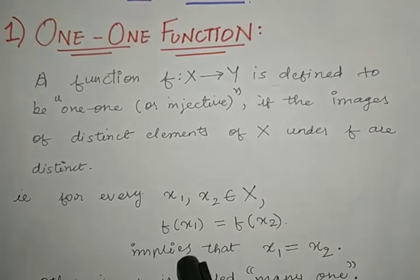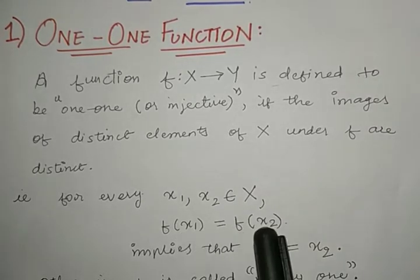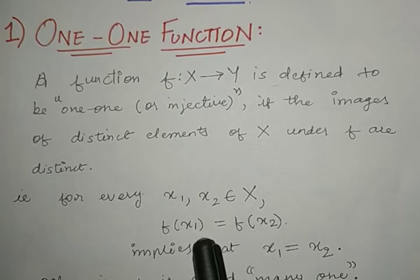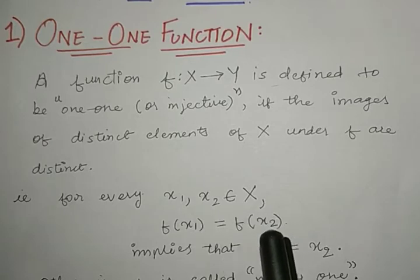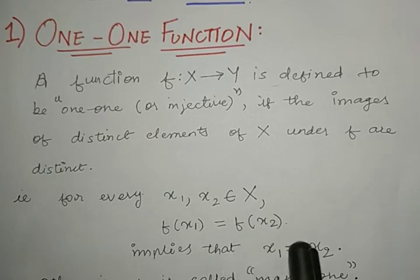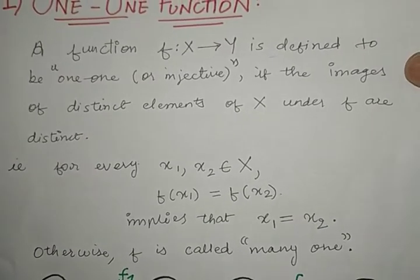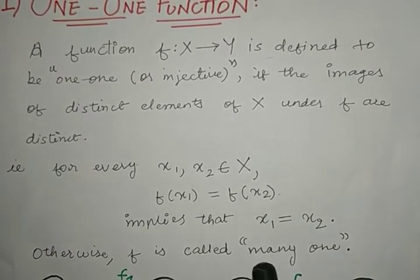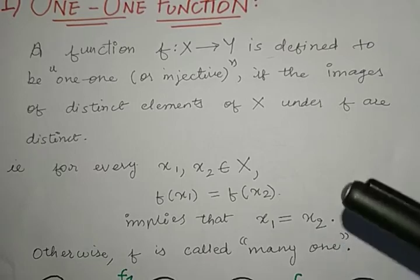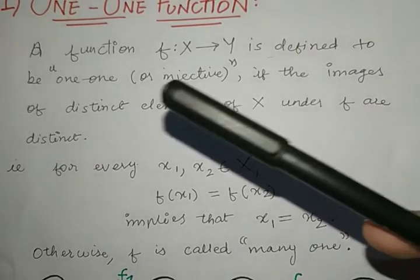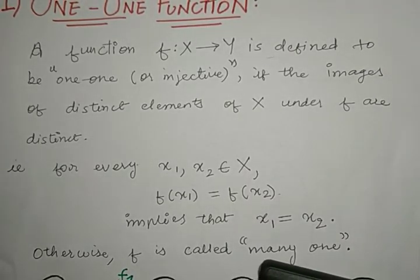So if you take the values of the function at x1 and x2 and if the values of the function at x1 and x2 are equal, then it will imply that x1 will be equal to x2. Otherwise f is called as a many-one function. If f is not one-one then f is called as a many-one function.